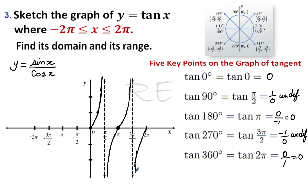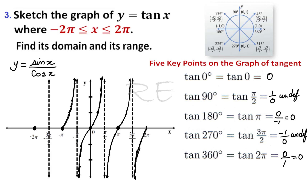We'll sketch the curve from three pi over two to two pi, knowing that the tangent of seven pi over four is negative one. We just have to reproduce the curve from zero to negative two pi, keeping our minds on the negative markers — the negative five key points.